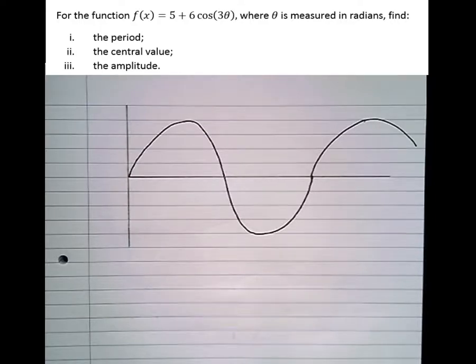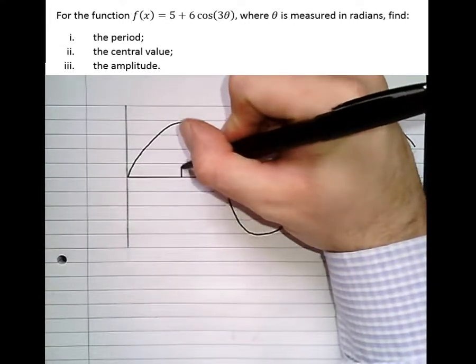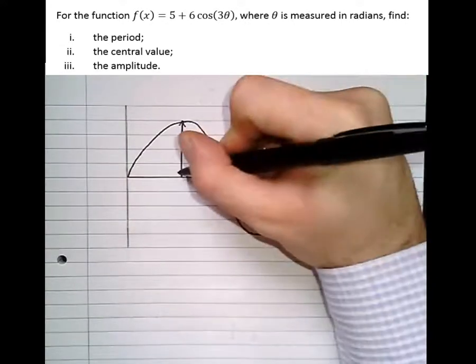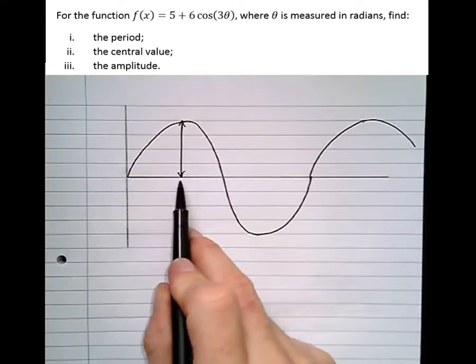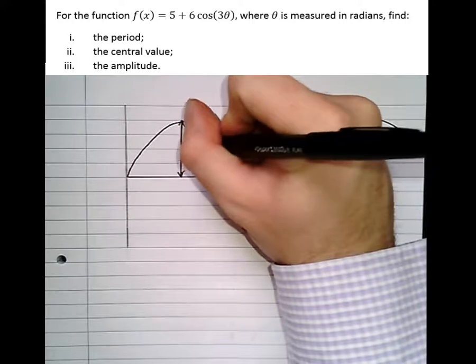So what I'm going to do is label the amplitude of the graph. Now what the amplitude is, is the distance between the middle of the wave and the peak. This is called the amplitude.